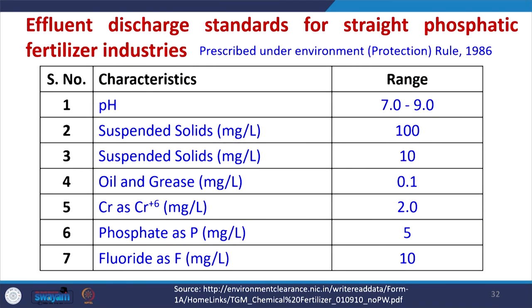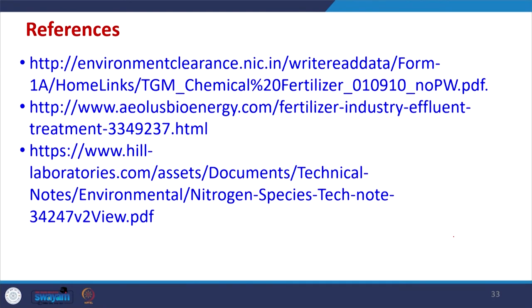For straight phosphatic fertilizer industries, the prescribed standards are: pH between 7 to 9, suspended solids less than 100 mg/L, oil and grease less than 0.1 mg/L, chromium(VI) less than 0.1 mg/L and total chromium less than 2 mg/L, phosphate limited to 5 mg/L, and fluoride limited to 10 mg/L.